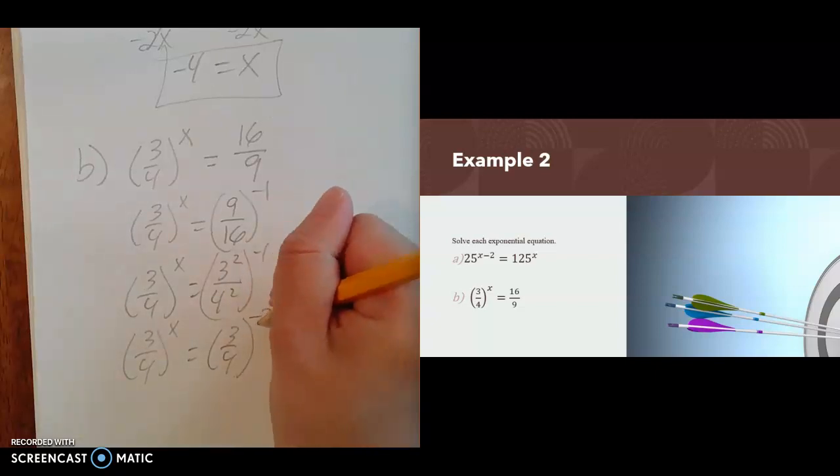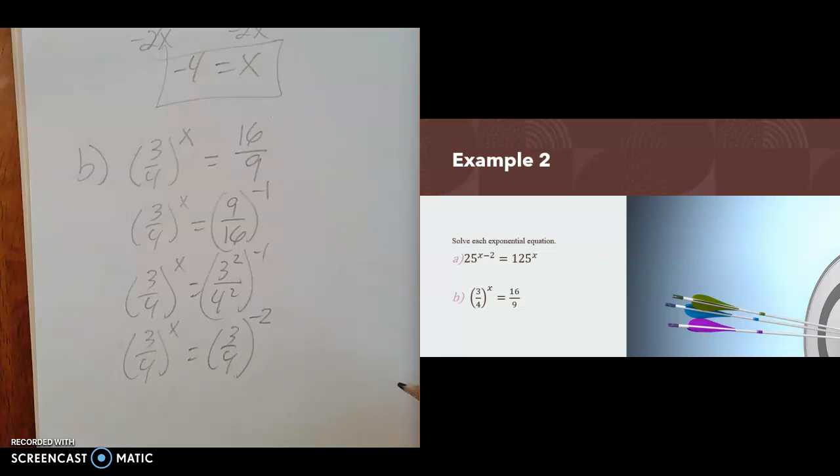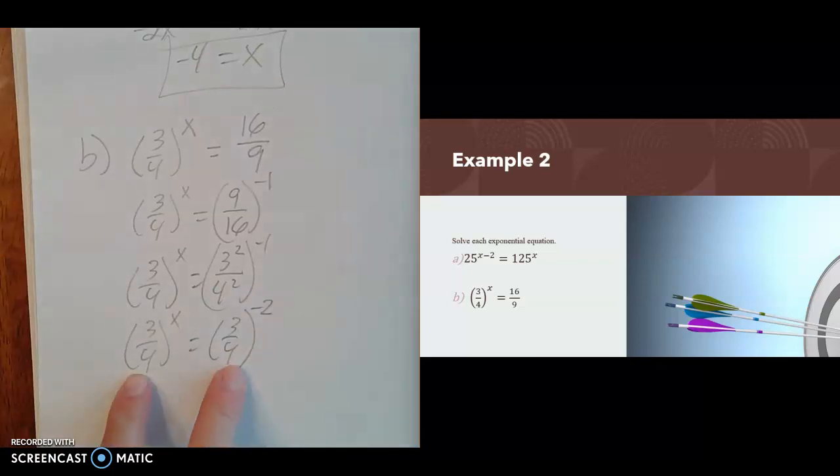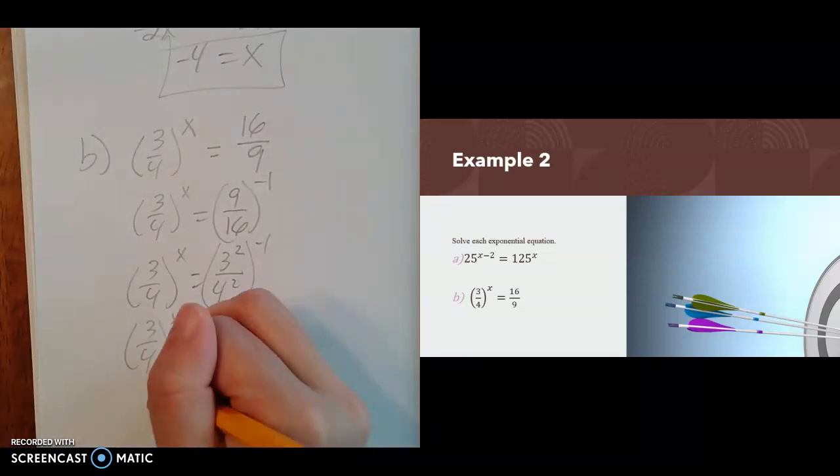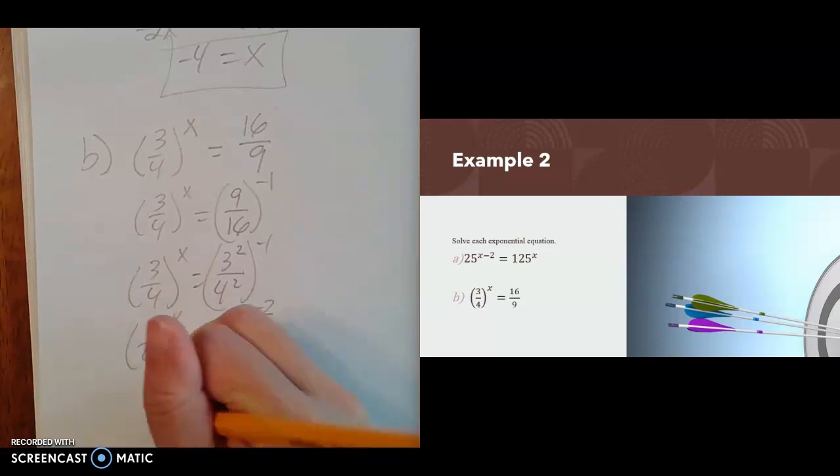And have this as 3 fourths raised to the second power and the negative first power. 2 times negative 1 is negative 2. So now I have the same bases. I can set my exponents equal to each other, so x is negative 2.